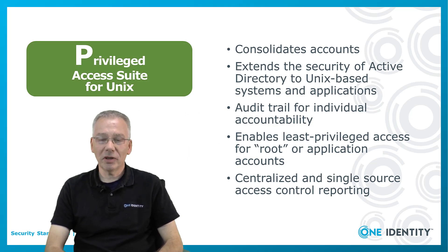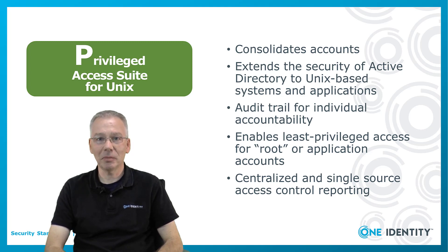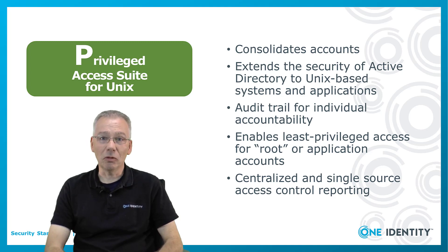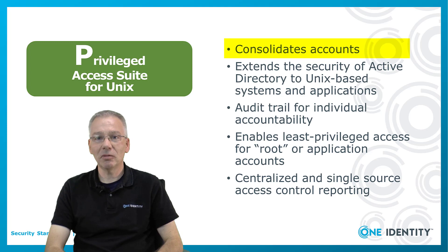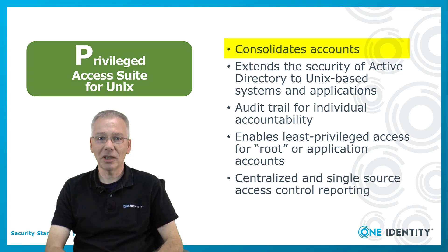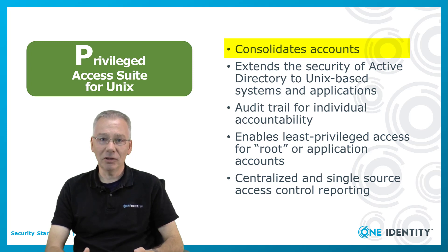Before we go through the various components of the Privileged Access Suite for UNIX and how to configure them and introduce them into your environment, let me give you a short overview about the capabilities of the various parts of it. The suite has multiple building blocks. The first thing it does is consolidating your accounts from UNIX and from Windows into Active Directory, so every account is now located in Active Directory, which will be used as your source for authentication or authorization.